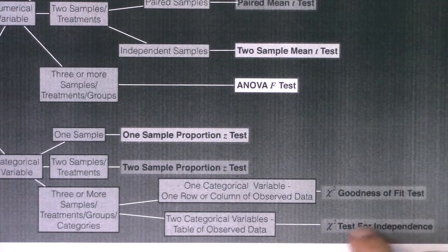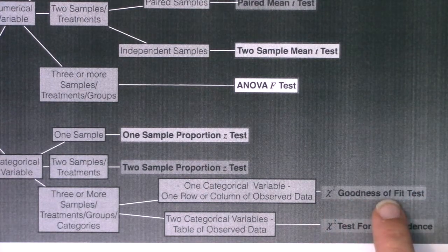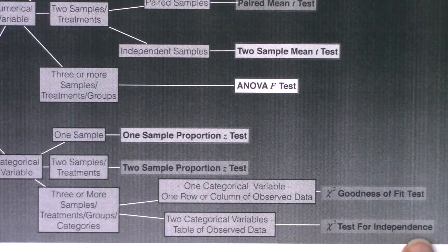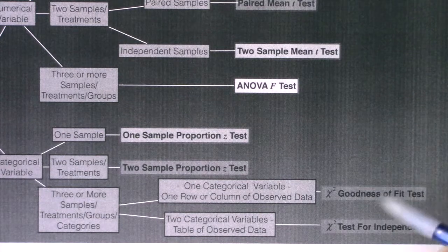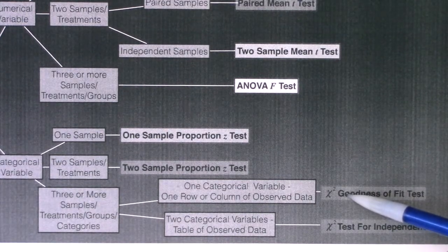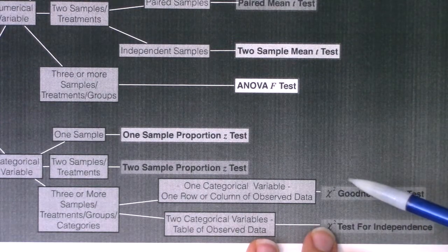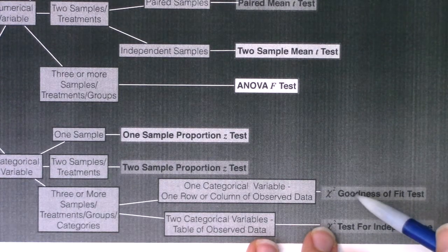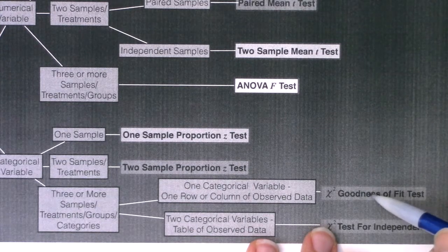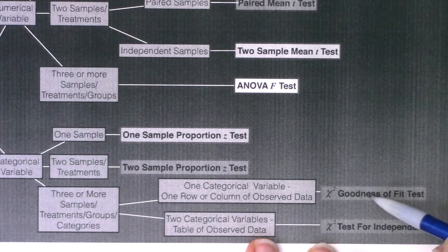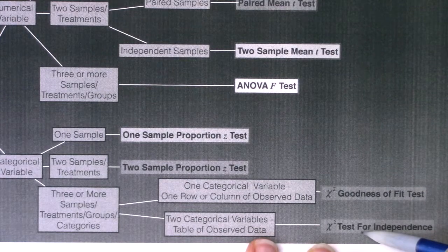We're either going to run the goodness of fit test — sometimes called the GOF test, because the acronym is G-O-F — or we'll run the test for independence. For the GOF test, some calculators are more advanced. If you have the TI-84, most of you have the GOF test built in, though some TI-84s don't depending on when the calculator was made. If you have the TI-83, you do not have the GOF test built in, but I'll show you the TI-83 way. All of us will have the chi-squared test for independence built in.